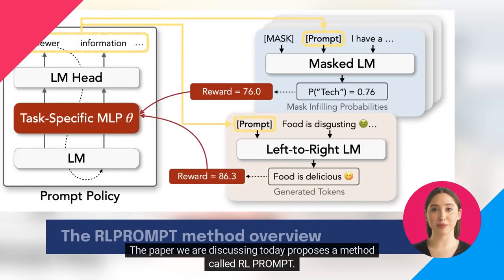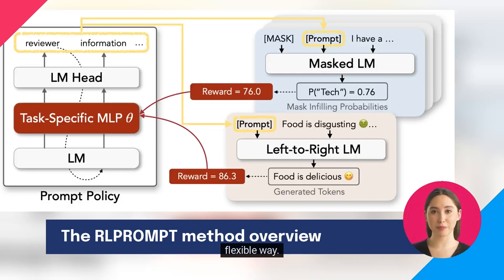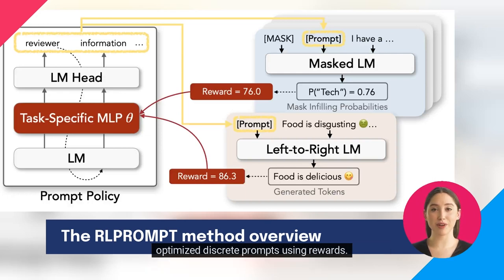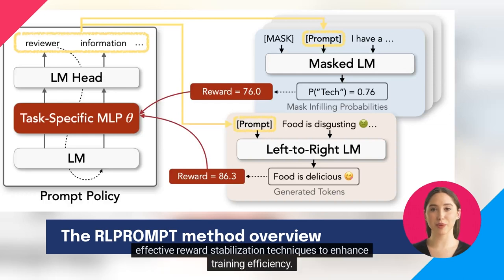The paper we are discussing today proposes a method called RL Prompt. This new approach uses reinforcement learning, RL, to optimize discrete prompts in a more efficient and flexible way. The RL Prompt model, summarized in this image, consists of a policy network that is trained to generate optimized discrete prompts using rewards. To deal with the complex and stochastic reward signals from the large LM environment, RL Prompt incorporates effective reward stabilization techniques to enhance training efficiency.